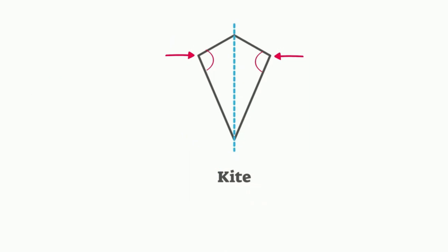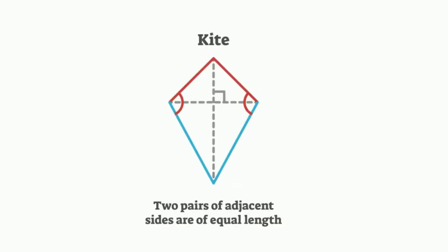If you look at the diagonals, the longer diagonal cuts the shorter diagonal in half. The diagonals of a kite are perpendicular to one another, which results in the diagonals creating right angles. The longer diagonal is also an angle bisector to the top and bottom angles.